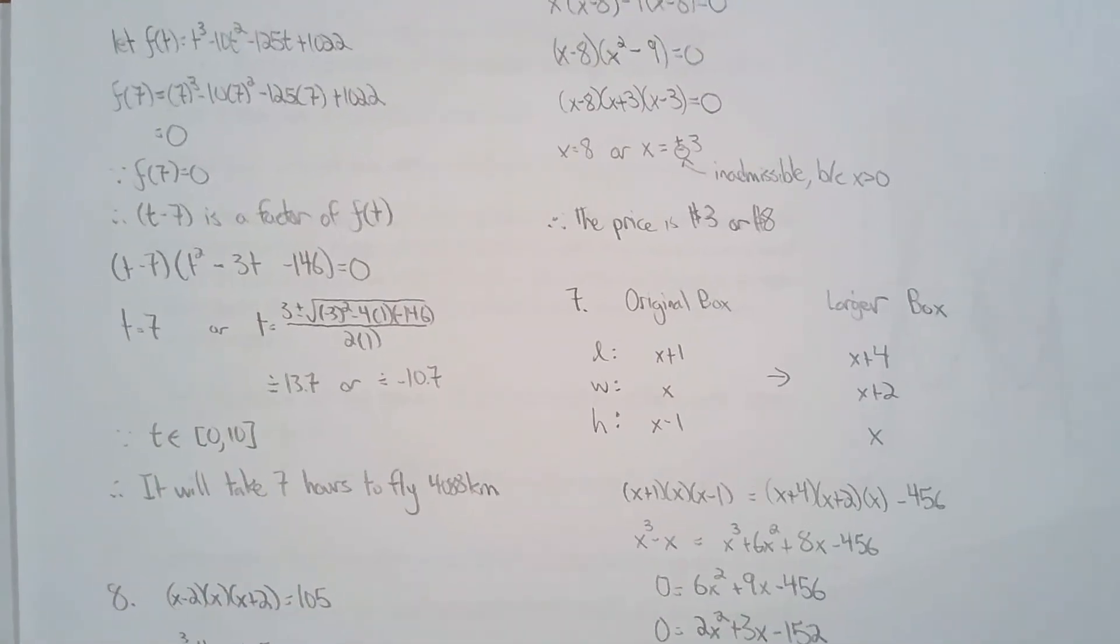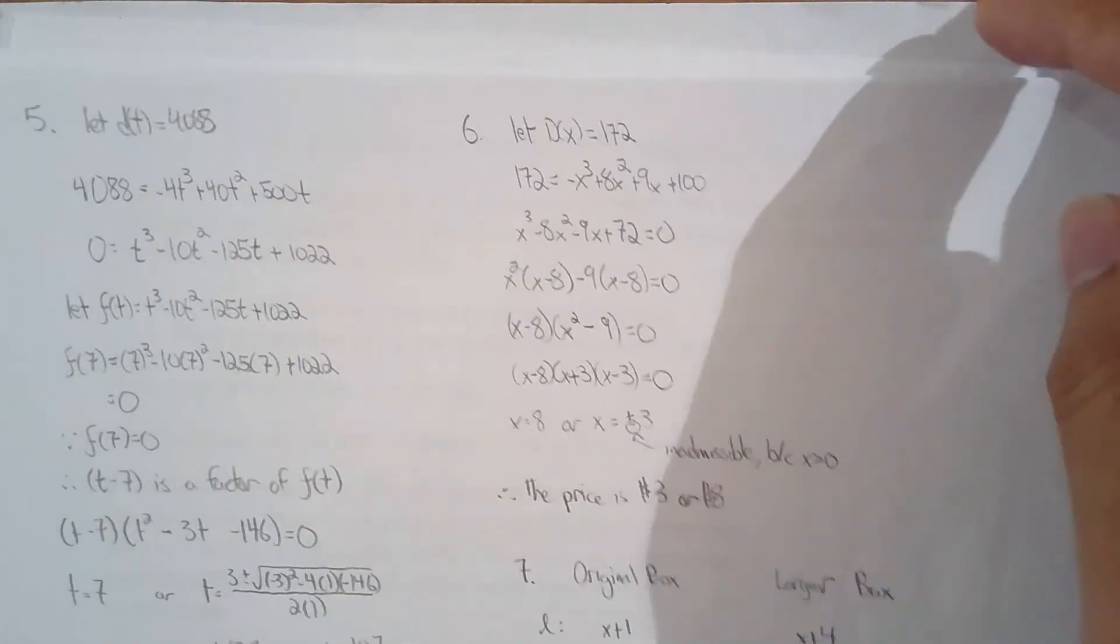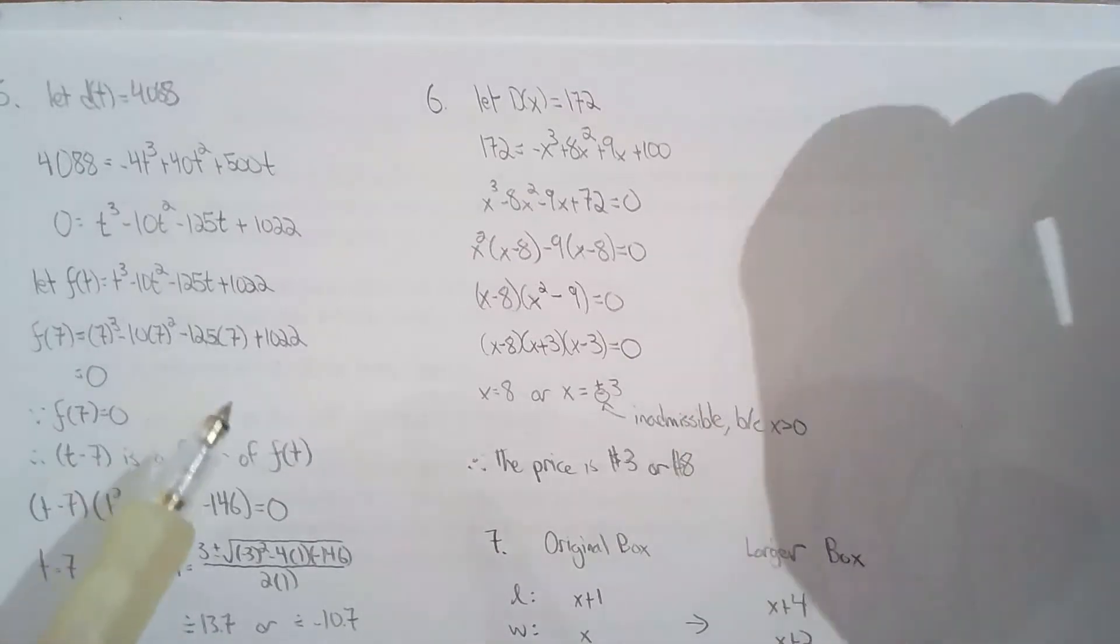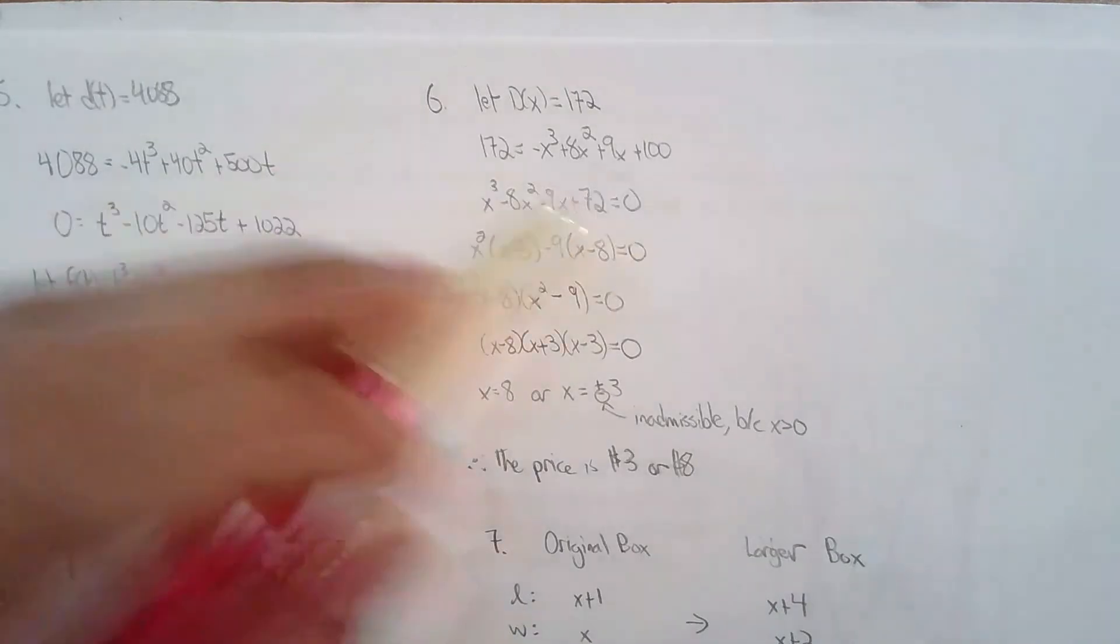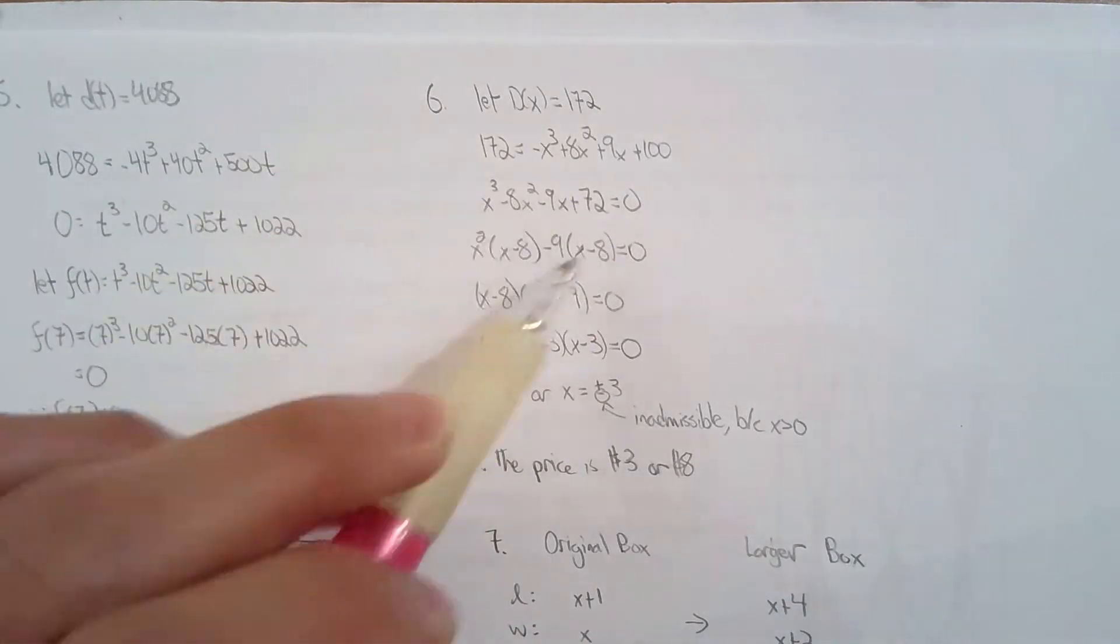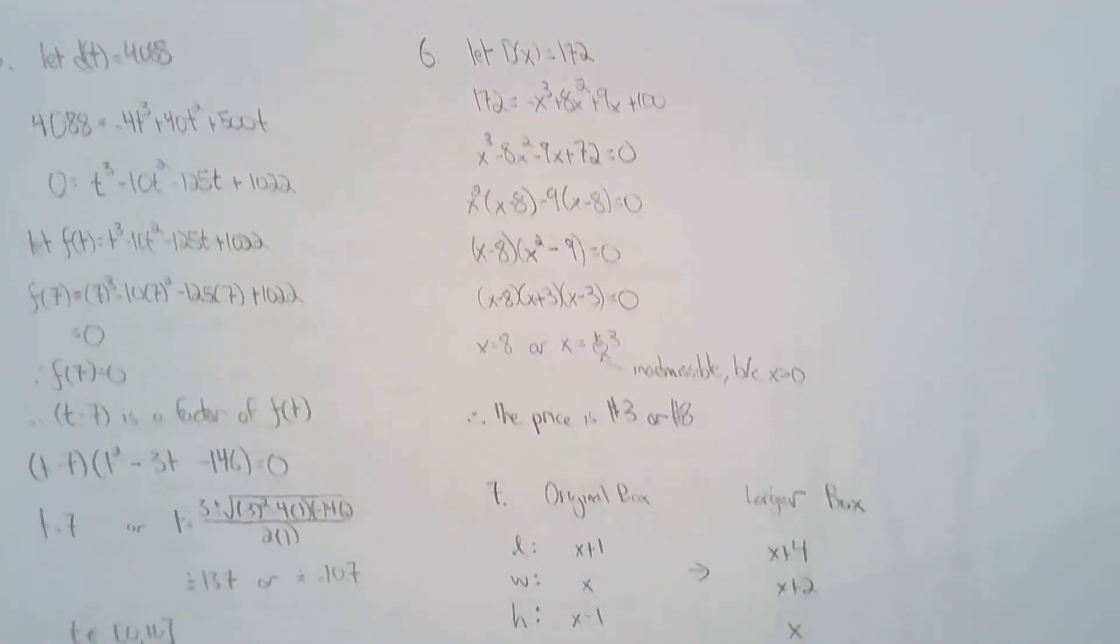Question 6. Another question where the model is given to us. So, 17,200 bottles were sold. So, what's the price? So, solve for X. If D of X is 172, I can solve this. I can factor by grouping. Much easier. And you'll find that it's either $3 or $8 for that sunscreen bottle.